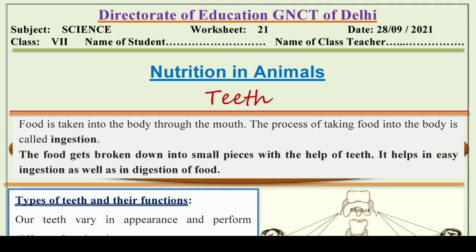Hello and welcome to Lavneesh Sarki class. This is Directorate of Education GNCT of Delhi's Worksheet No. 21, and it is only for class 7 students. It is taken from the subject Science, and we will learn and understand the chapter Nutrition in Animals in this worksheet. We will also discuss the topic Teeth in this worksheet. Today we will discuss about Teeth, which is an important part of our body.